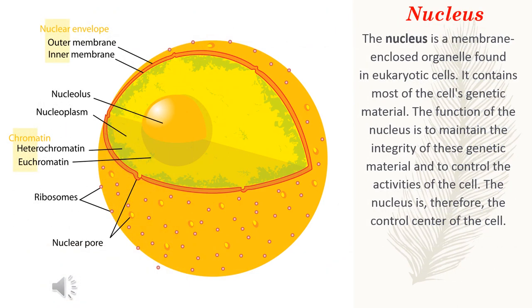Nucleus. The nucleus is a membrane-enclosed organelle found in eukaryotic cells. It contains most of the cell's genetic material. The function of the nucleus is to maintain the integrity of this genetic material and to control the activities of the cell. The nucleus is, therefore, the control center of the cell.